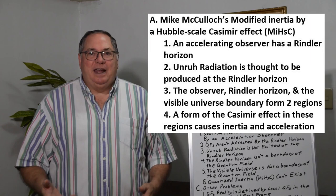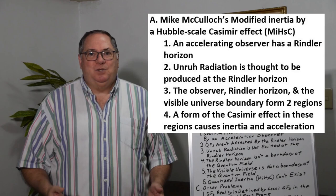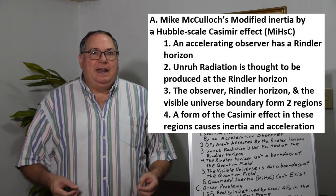For those who aren't familiar with the theory of quantized inertia, a man named Mike McCulloch came up with what he called his Modified Inertia by a Hubble Scale Casimir Effect, abbreviated MIHSC.